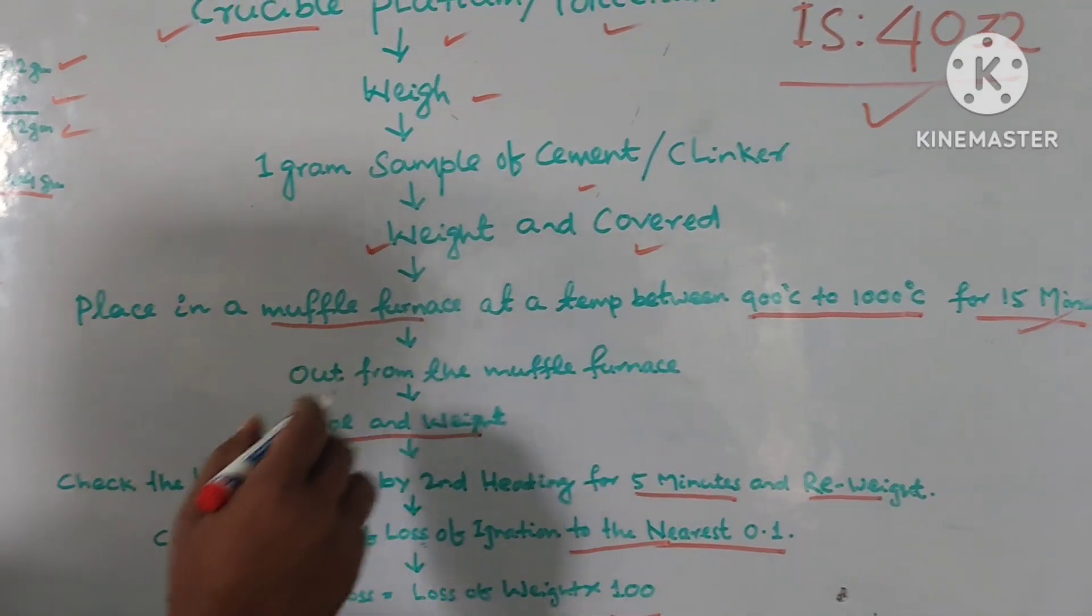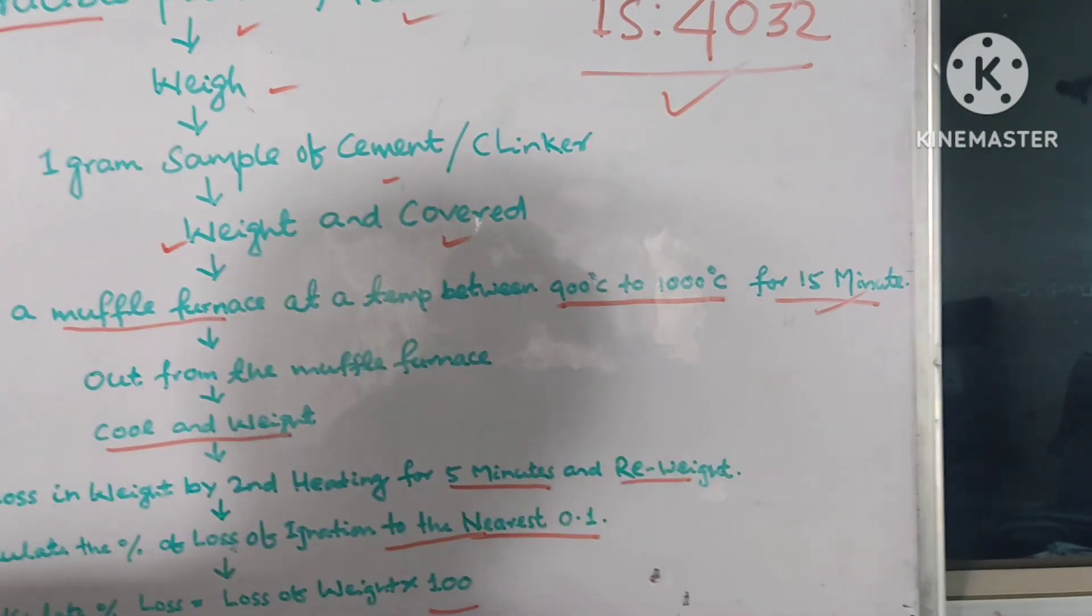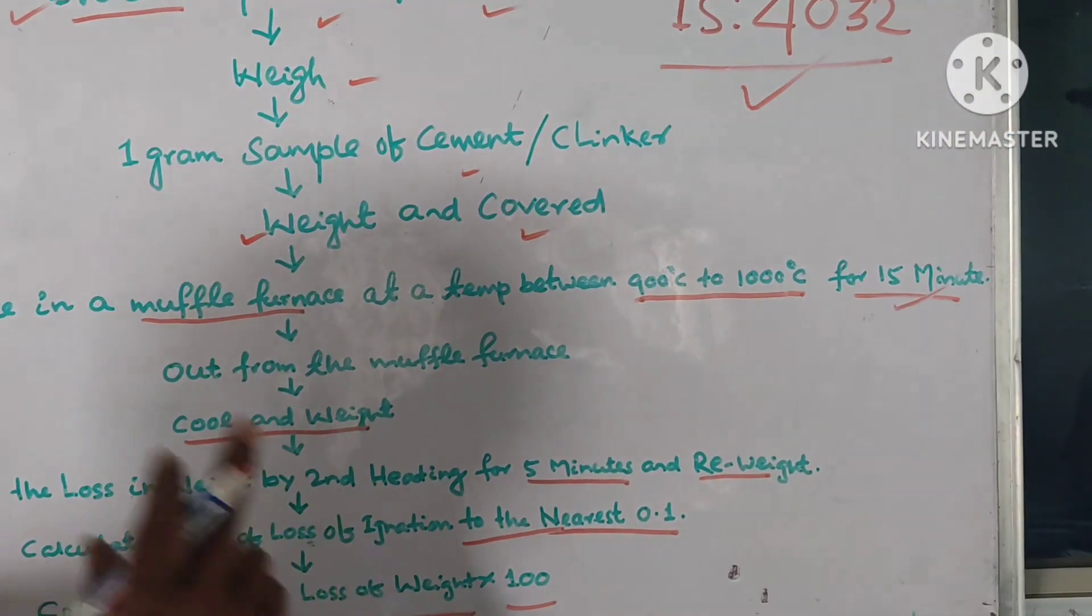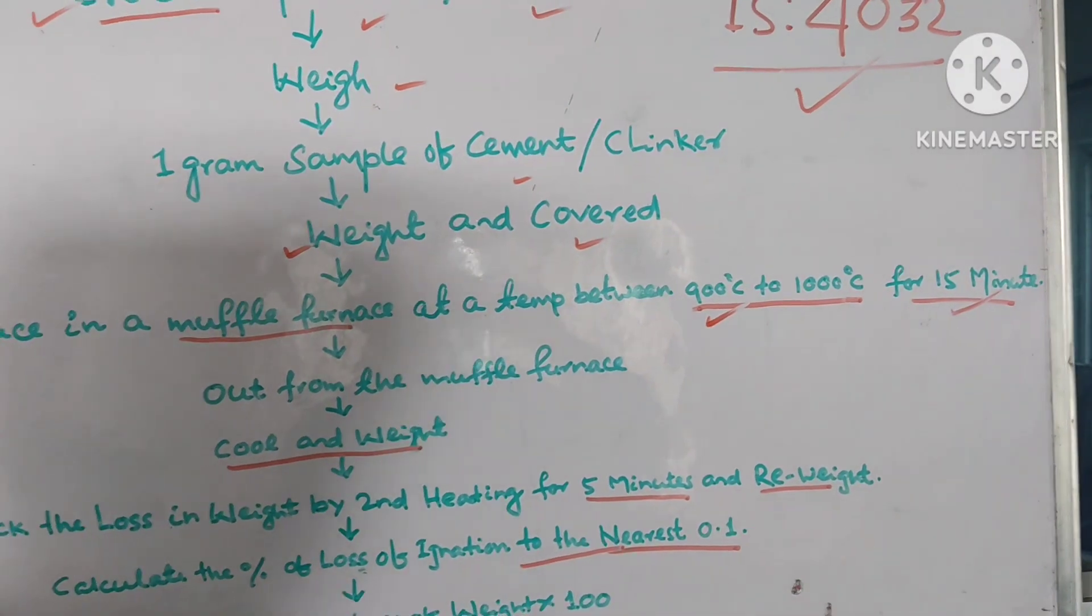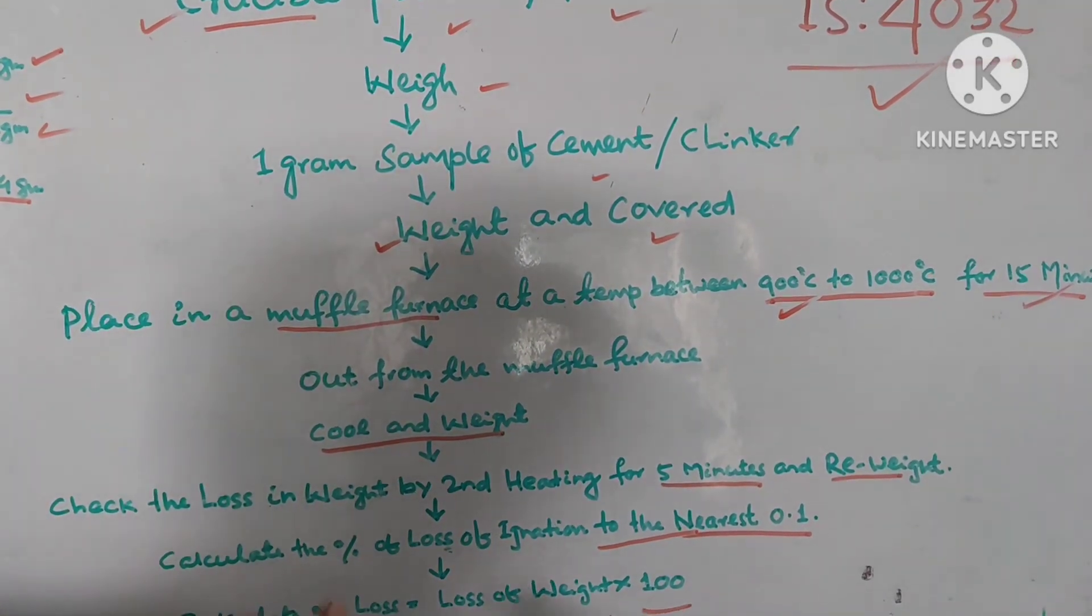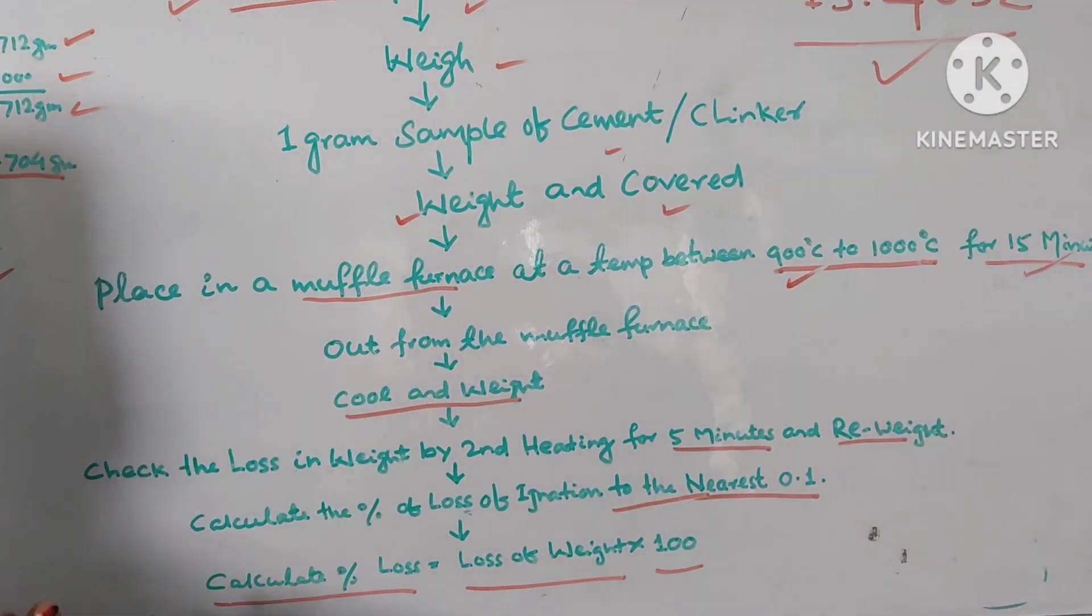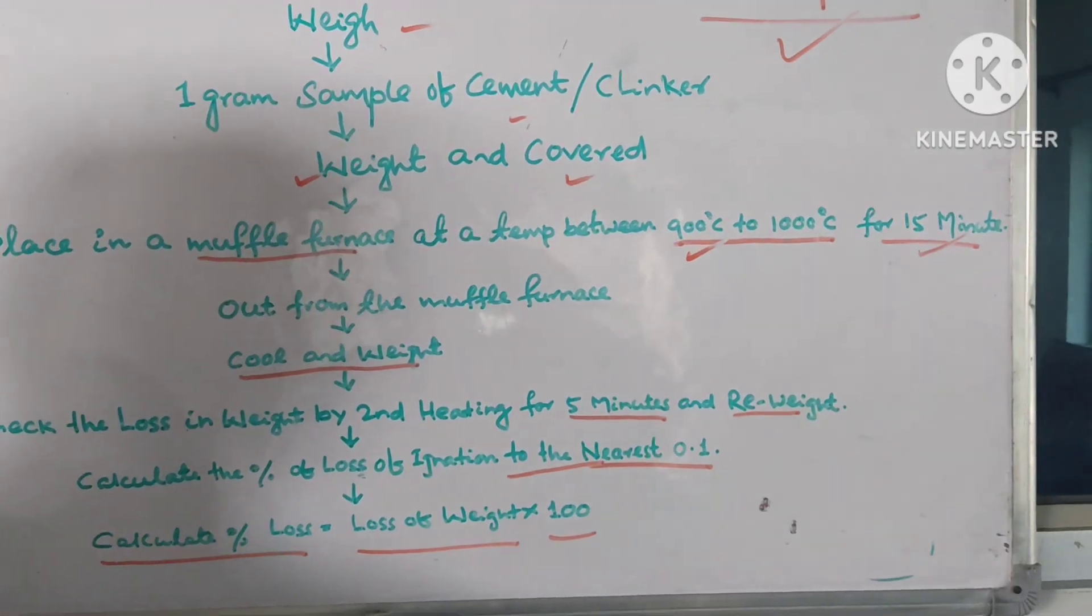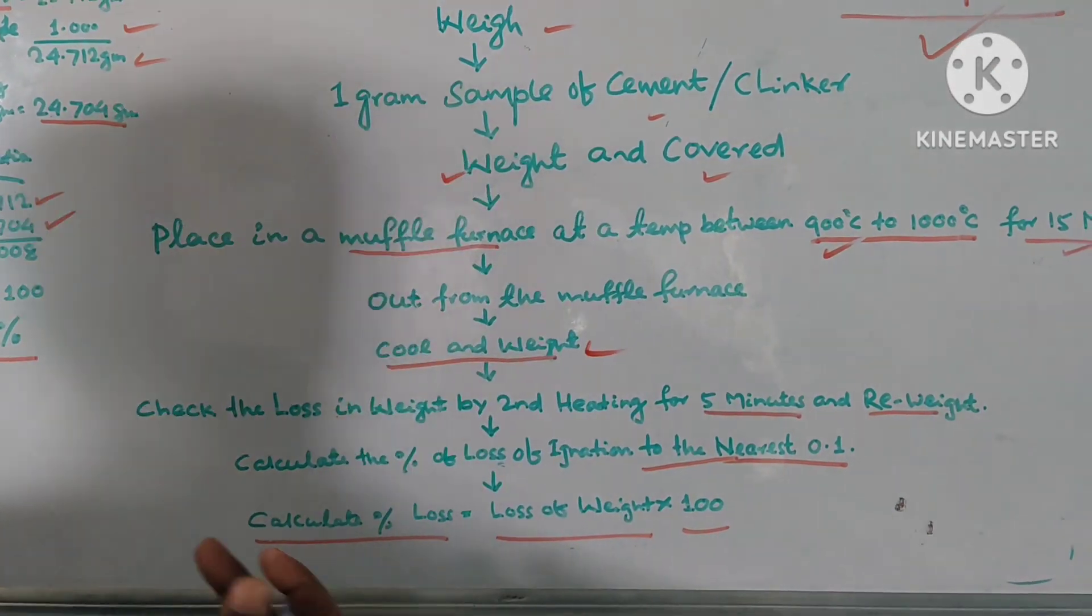Then place in a muffle furnace at temperature 900 degree centigrade to 1000 degree centigrade for 15 minutes. When your weight complete and covered, then place it to a muffle furnace for 15 minutes at temperature 900 degree to 1000 degree temperature. Then for 15 minutes complete, you stop and then out from the muffle furnace and cool it and weigh the crucible. LOI complete. Loss complete.